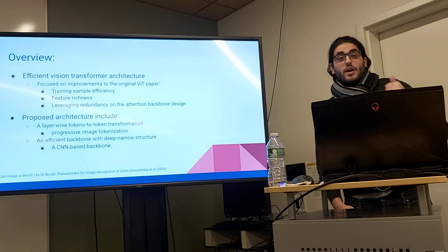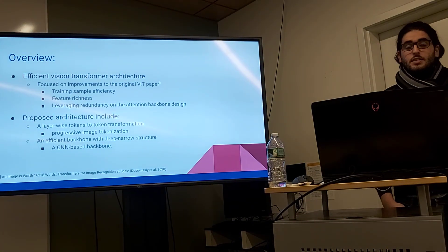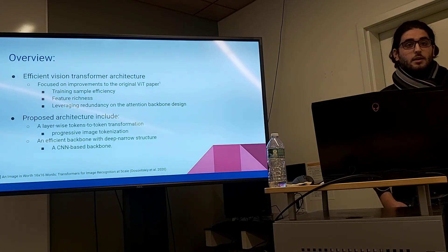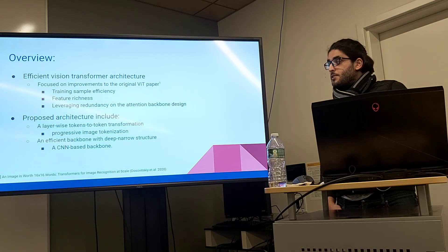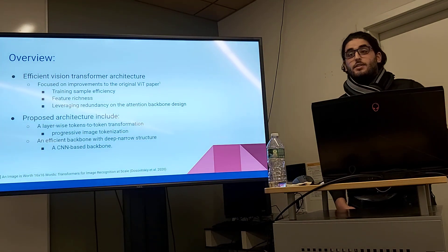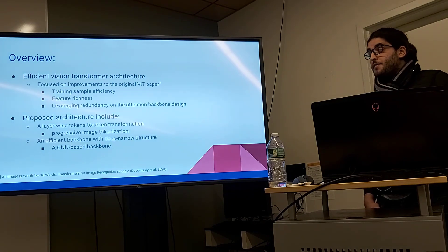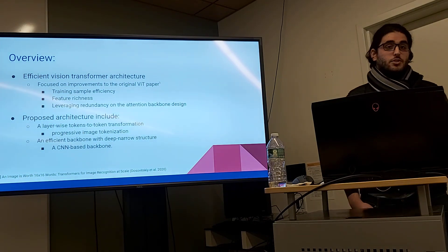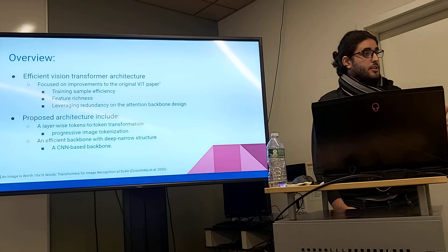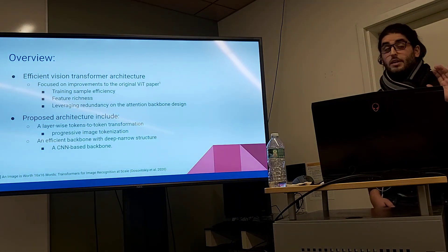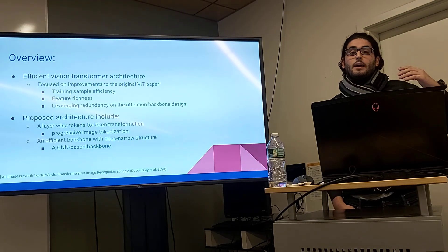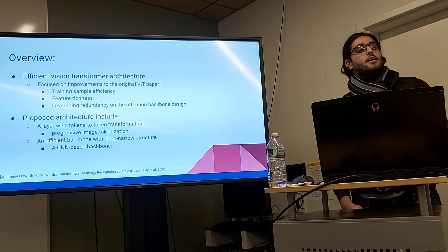These improvements include training, sample efficiency, feature richness, and leveraging redundancy on the attention backbone design. The proposed architecture includes a layer-wise Tokens to Token Transformation, which is a progressive tokenization of images, and an efficient backbone with deep neural structure inspired from well-designed CNN architectures. Note that they are not using CNNs within their structure, but only drawing inspiration from the way these CNNs were built.